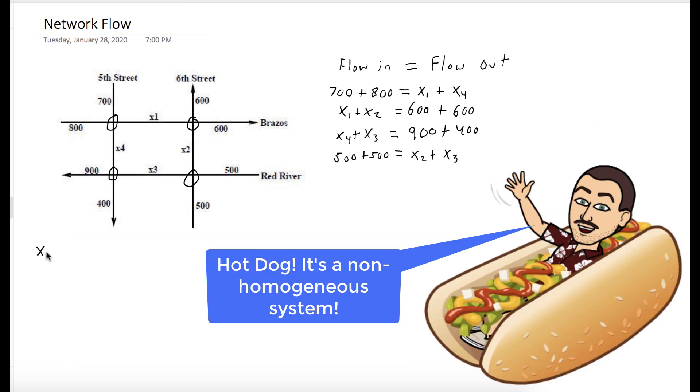So let's put all the variables onto the left side, all the constants on the right, and you'll see here we have a non-homogeneous system. And we know how to solve those.